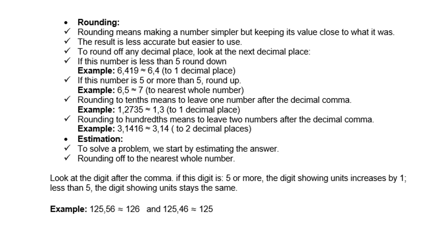Example, 6,419 equals 6,4 because we round it down. If this place number is 5 or more, then we round up. For example, 6,5 is the equivalent of 7.